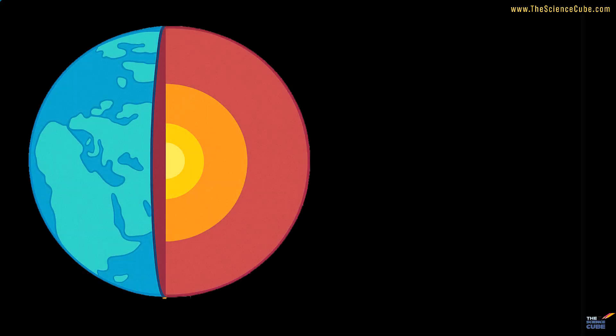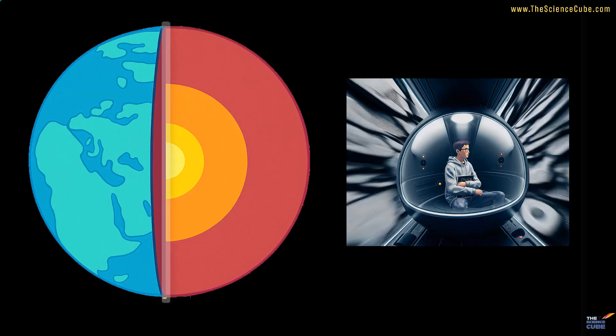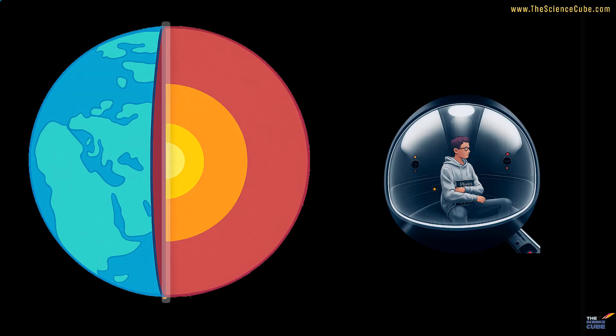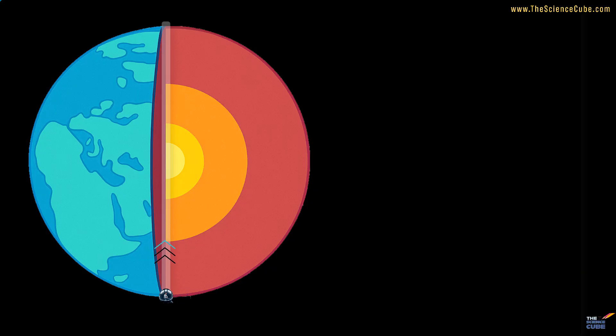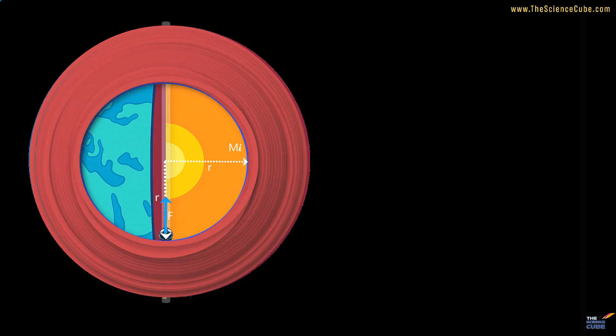To establish a formula for the gravitational force inside the Earth, we will make a journey from one pole to the other. Let us say you are in a capsule moving through a tunnel from the south pole to the north. At some time, this capsule is at a distance R from the Earth's center. Then, at this instant, the net gravitational force on the capsule is only due to the mass Mi in the sphere of radius R. Because this mass outside, in this shell, does not contribute to the gravitational force in any way.